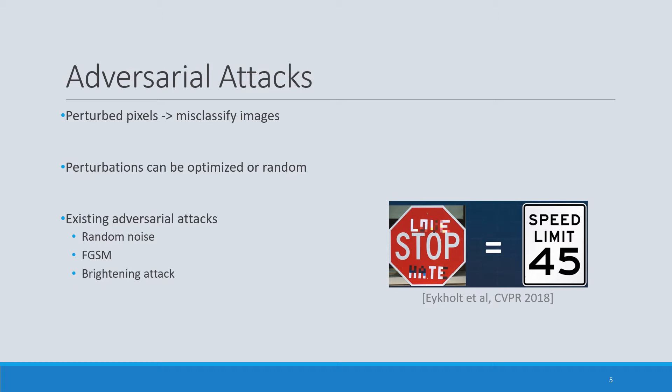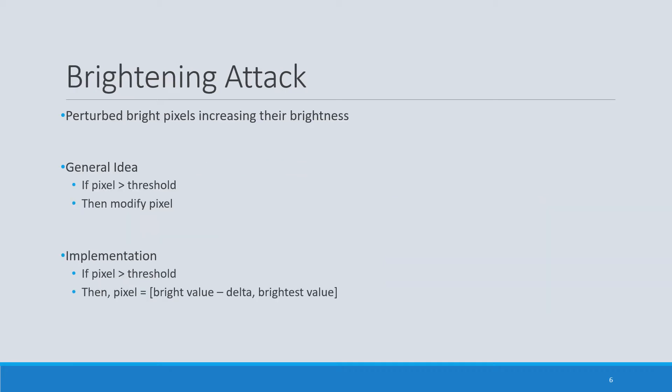In our case, we're going to use the brightening attack. The brightening attack consists of perturbing the brightest pixels in the picture. We set a threshold value for all pixels, and if a pixel is greater than the threshold, we modify its value to make it brighter. Specifically, if the pixel value is above the threshold, we set the pixel to a value ranging from the brightest value minus delta up to the brightest possible value, effectively setting these pixels to intervals rather than single values.